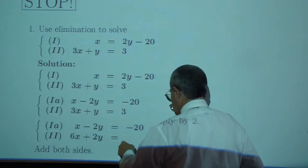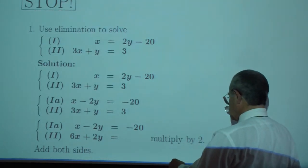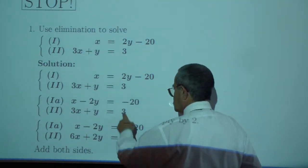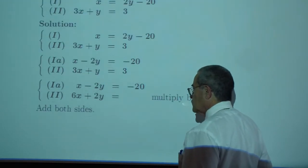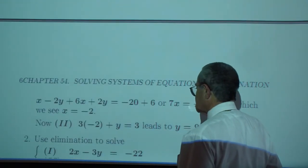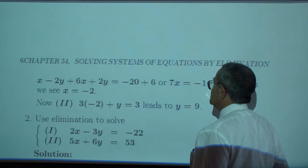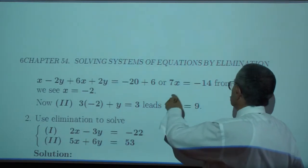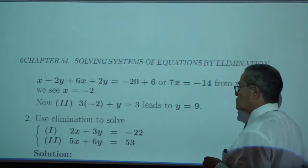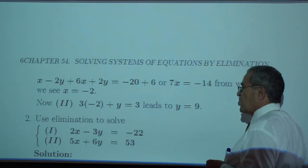So you have minus 2y and plus 2y, which is equal to... what did I have on this side? There's a 6 missing here. Add both sides, and you are supposed to get, after you solve, x equals 2 and then y equals 9.